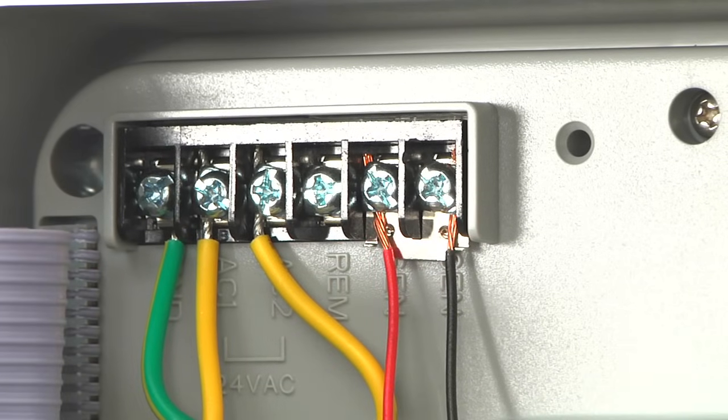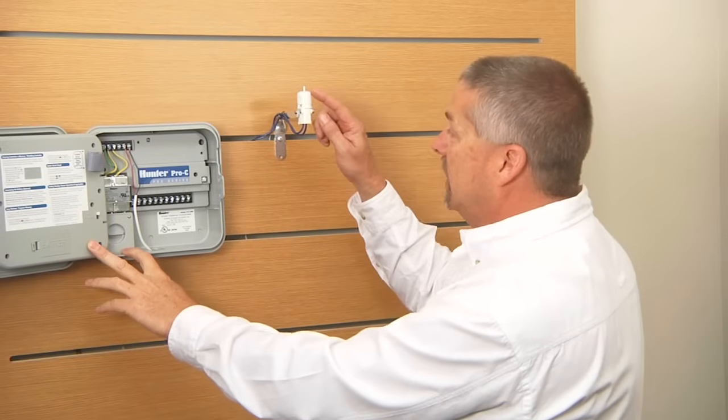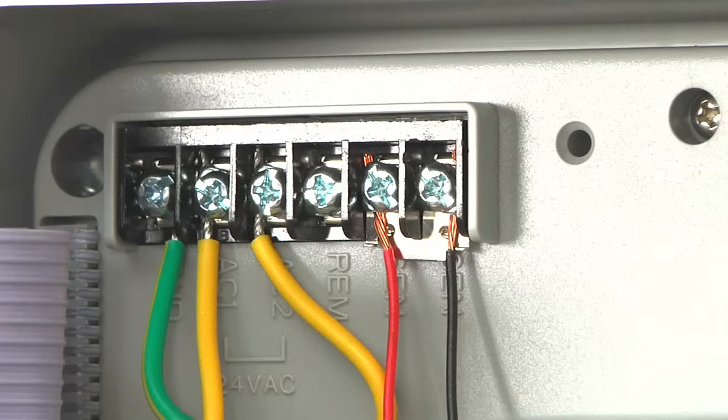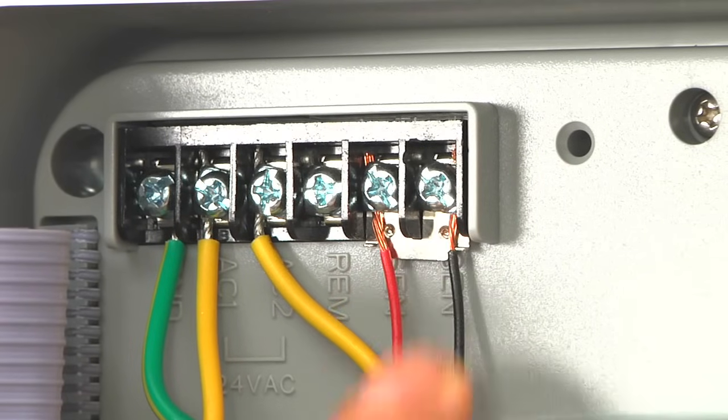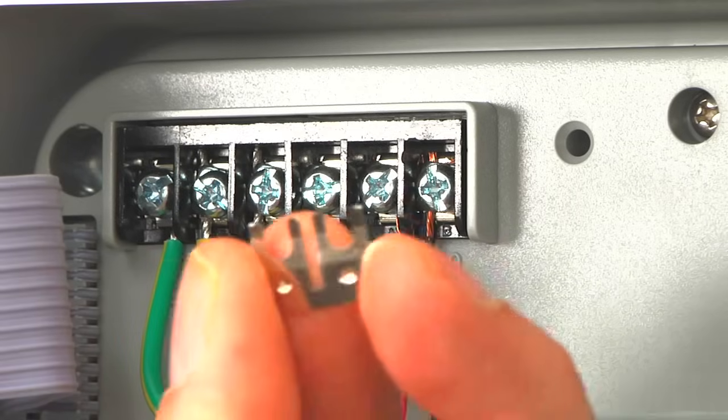If you install the rain sensor two wires out to the sensor and you leave the jumper tab in there, this sensor can get wet, the disc can expand, it can open the circuit all day long, but if that chrome jumper tab is still in place, the circuit will never open. So you want to make sure that you remove the chrome jumper tab.